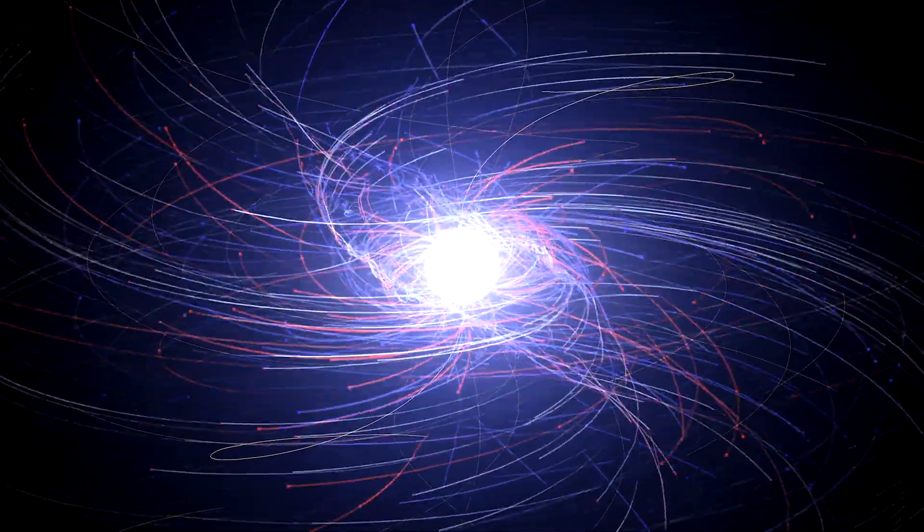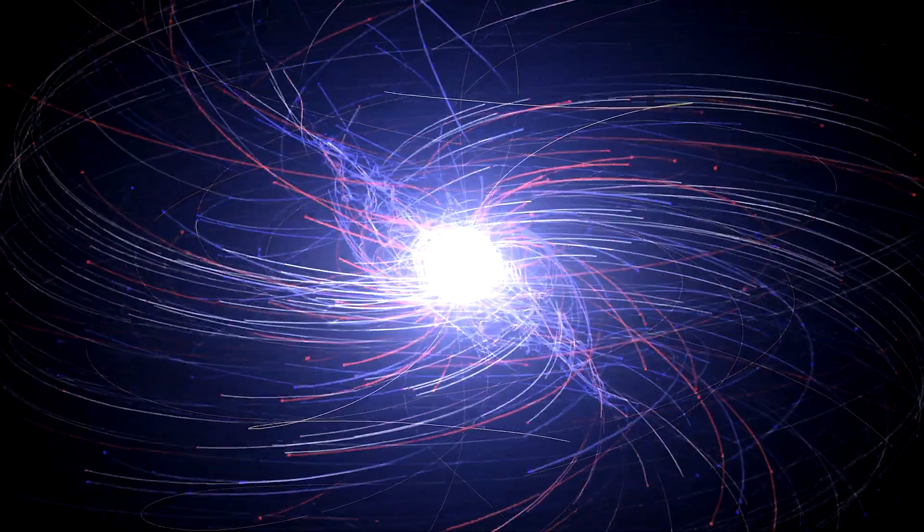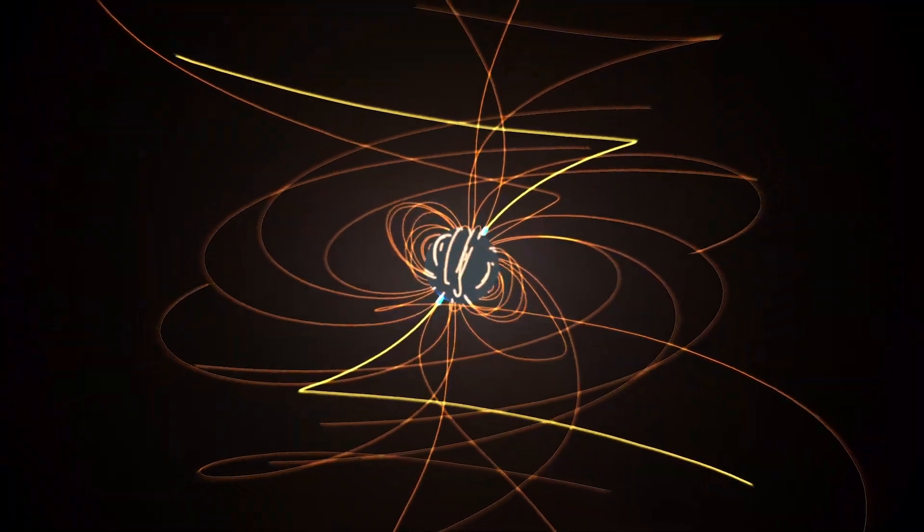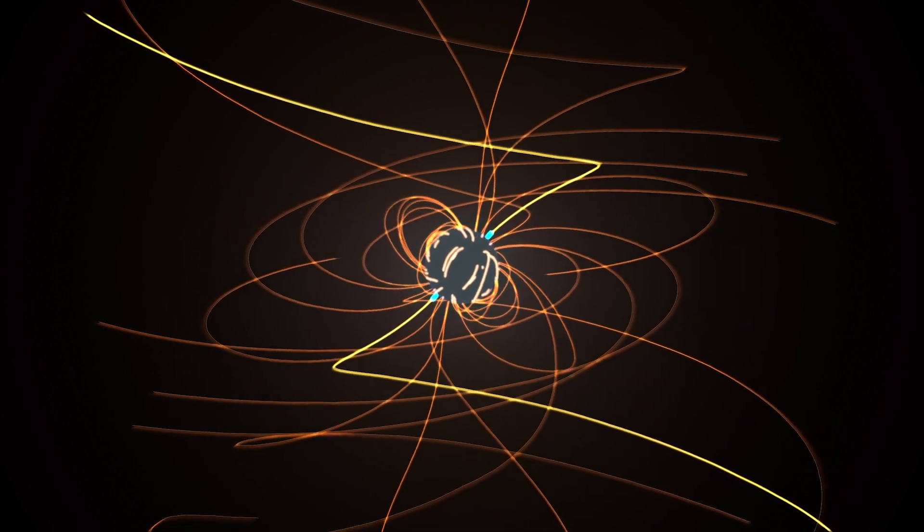Astronomers think all these signals originate from particle interactions in the pulsars' rapidly spinning magnetic field, but the details remain poorly known.